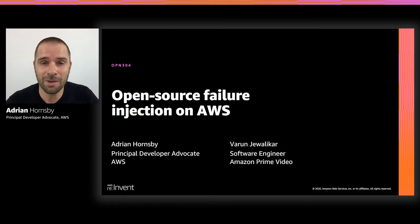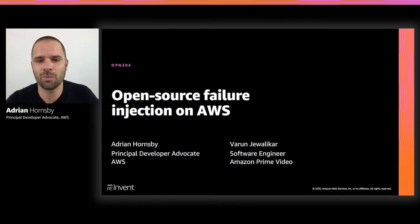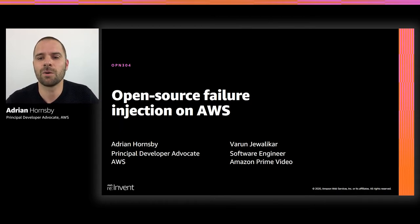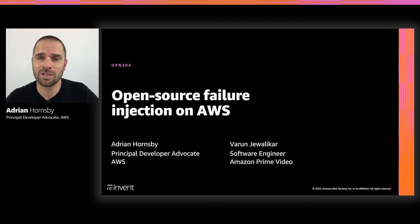Such events can be minimized with chaos engineering in general, which is a discipline that helps gain confidence in the system's resilience to failures. I'm Adrian Hornsby, a principal developer advocate for AWS. And in this talk, together with Varon J. Lee Carr, Software Engineering at Amazon Prime Video, we will present an open source failure injection solution for Amazon EC2 and ECS, which leverages AWS Systems Manager. We also discuss how Prime Video combines failure injection with load testing to achieve higher levels of resiliency.